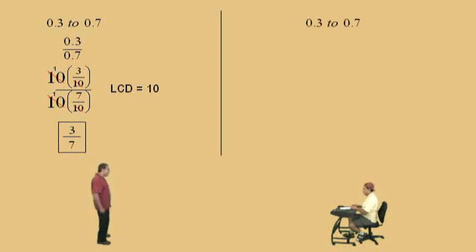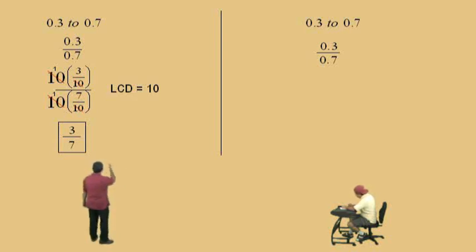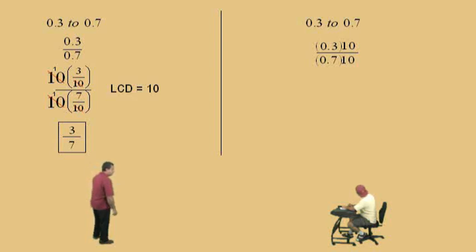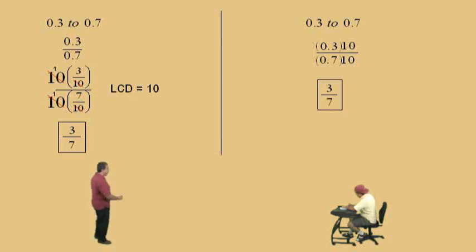Let's do another one. It's the same problem, but we're going to do it using the clearing decimals technique. One thing we want to realize is when you clear decimals, it's really clearing fractions, because 3 tenths is 3 over 10 — that's 0.3. But with a decimal, when you multiply 0.3 times 10, you move the decimal one place to the right. So 0.3 times 10 is what? 3. Because 3 tenths times 10 is 3. So we just move the decimal one place to the right. What's 0.7 times 10? 7. That's right, and there's our answer. Same answer, of course.